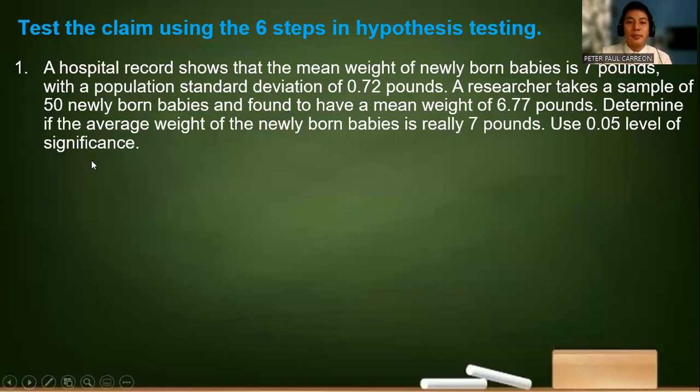So let's have a sample problem. Let us test the claim using the six steps in hypothesis testing. A hospital record shows that the mean weight of newly born babies is 7 pounds with a population standard deviation of 0.72. A researcher takes a sample of 50 newly born babies and found that the mean weight is 6.77 pounds. Determine if the average weight of the newly born babies is really 7 pounds. Use 0.05 level of significance.